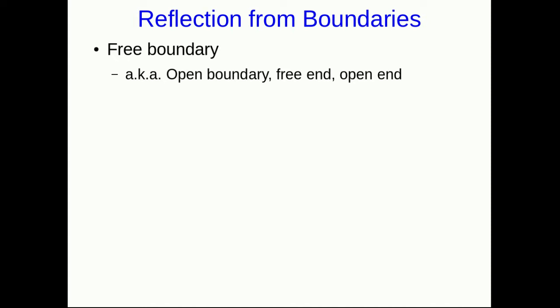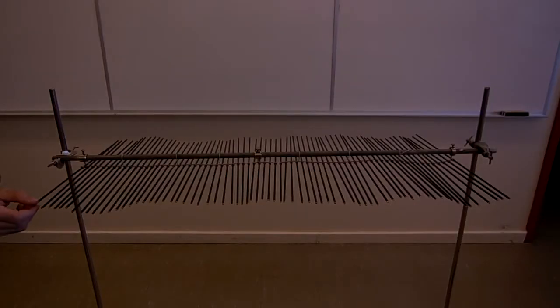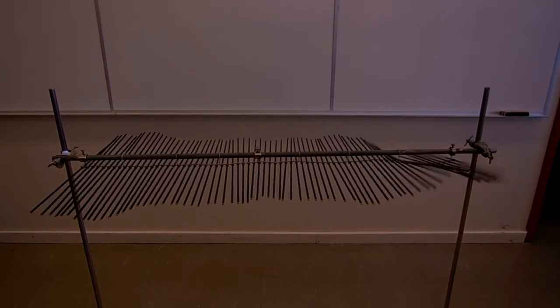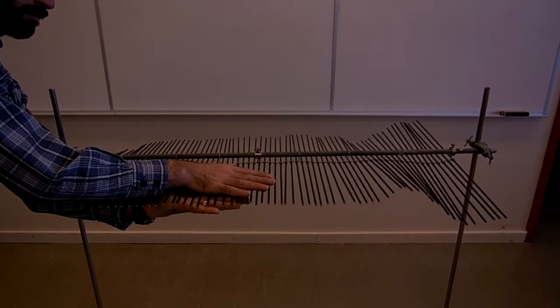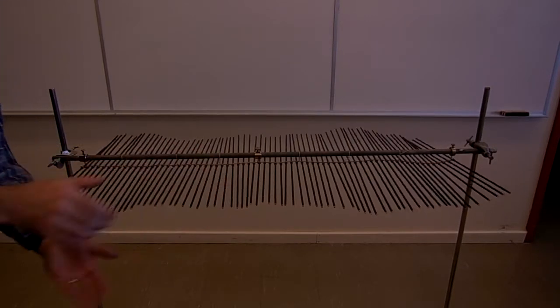Now seems like a good time to look at this — it's to do with boundaries, or the ends of systems. We're going to start by looking at a free boundary, also called an open boundary, or sometimes just called an end. The point of a free boundary is that it is a boundary where the pieces of the medium at the ends of the system are free to move — nothing is holding them in place. One of the best things to look at to see these effects is what is called a wave machine, which has nice, clean, reasonably slow-moving waves that are easy to see.